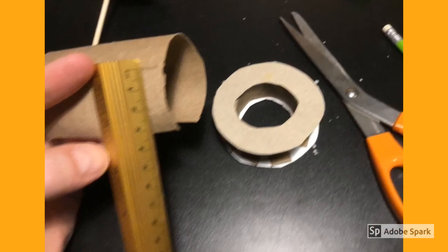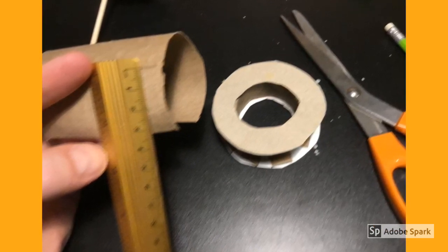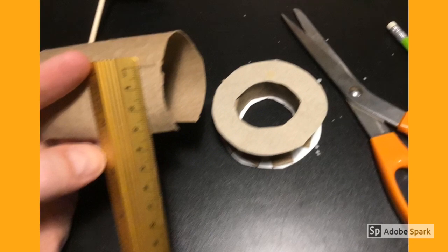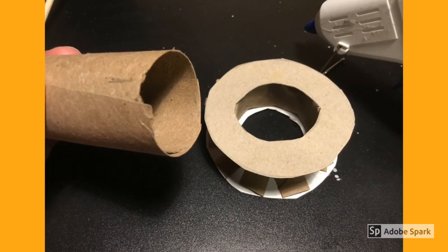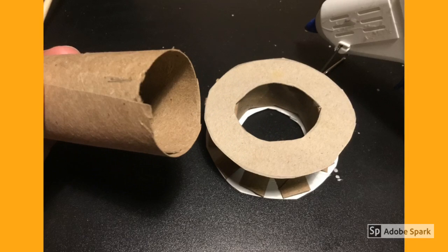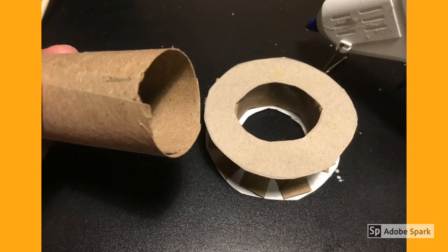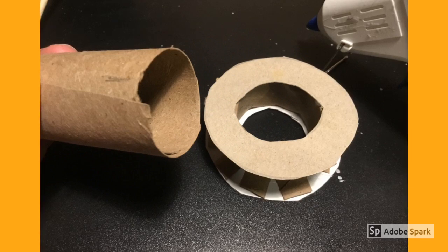With the cut cylinder, measure about 3 to 4 centimeters and mark it off. Roll the cylinder to meet the mark you just created, so that the diameter of the 10 centimeter cylinder gets smaller. Use your adhesive to secure the new shape.